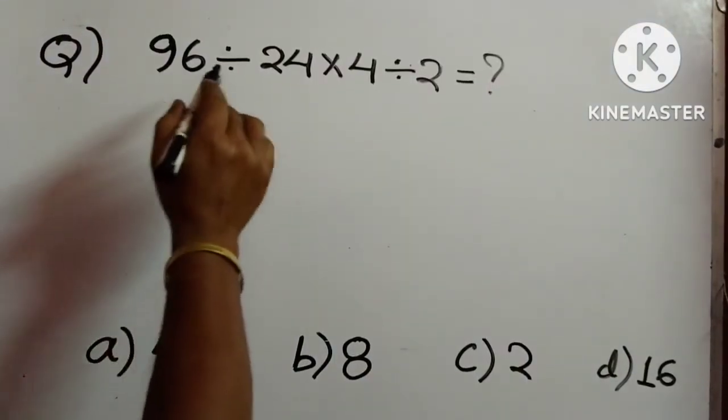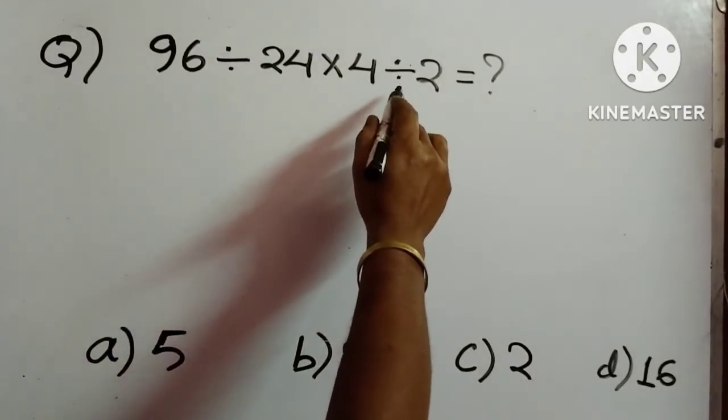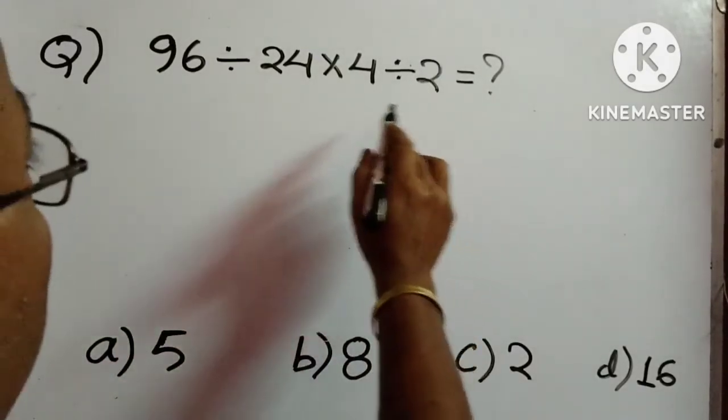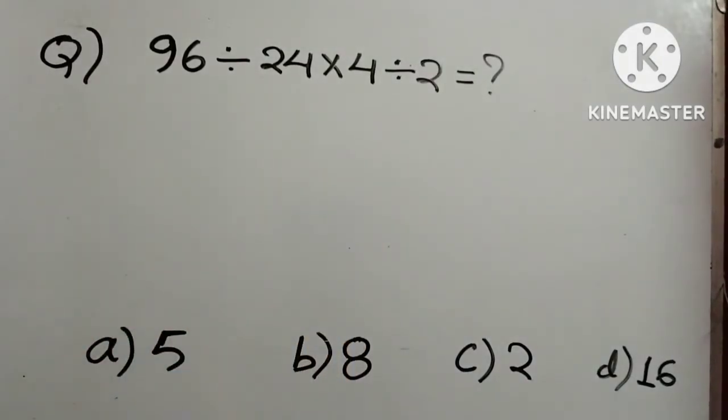Again, the next question, 96 divided by 24 into 4 and then again, divisibility is there and 2. We have to find out the value and the four options are given.